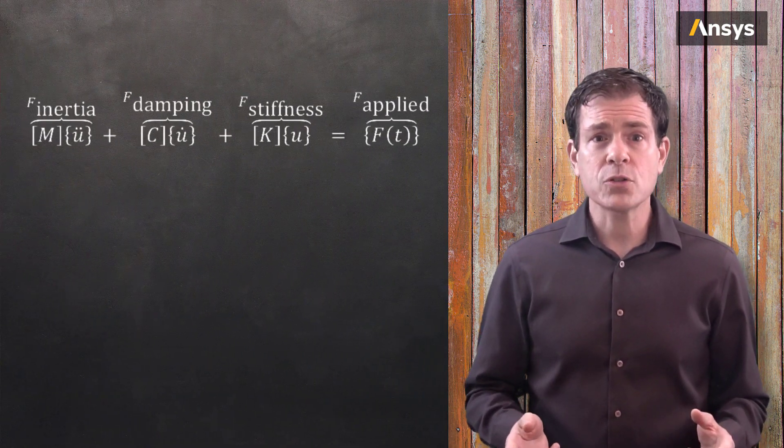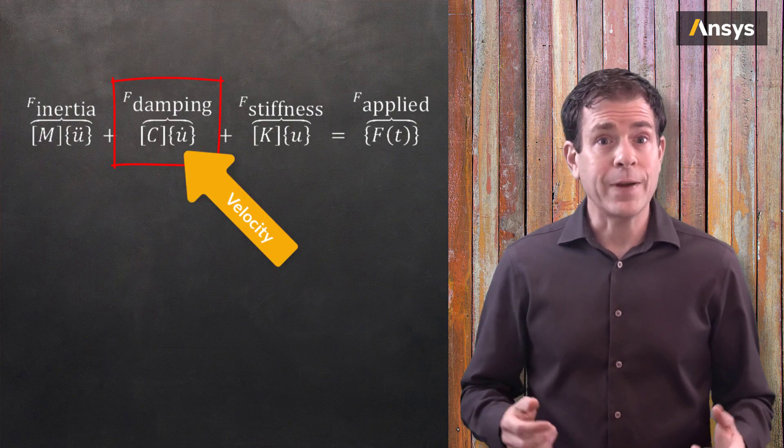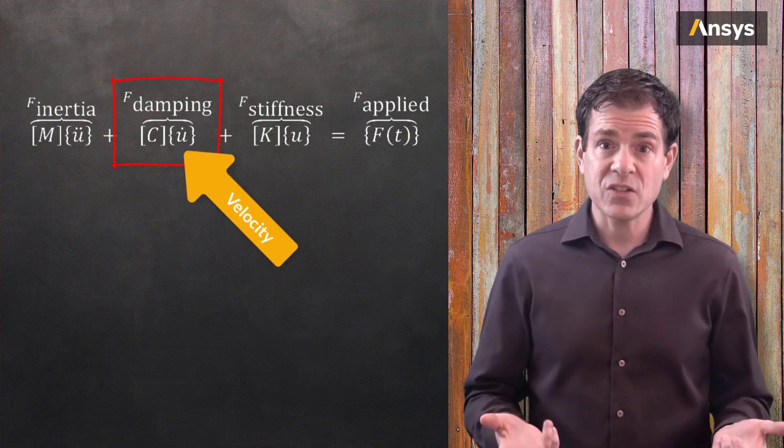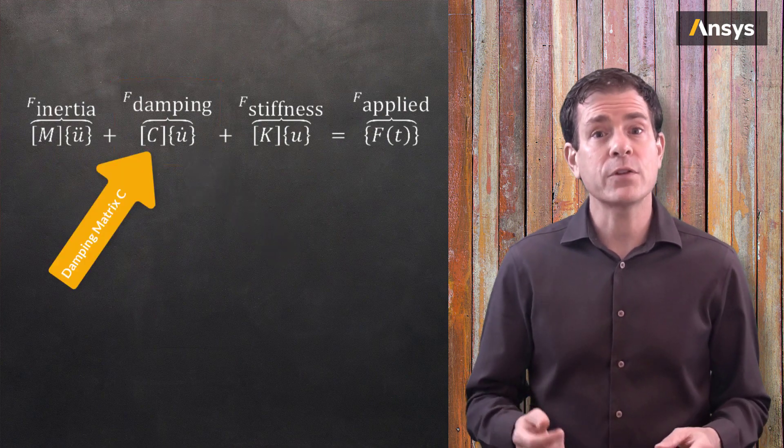The damping force is proportional to the velocity of the damper, so fast motions resist greater than slow motions. We specify C or the C matrix to account for this type of damping.